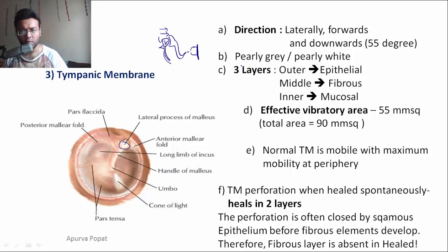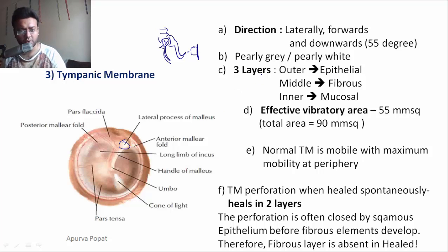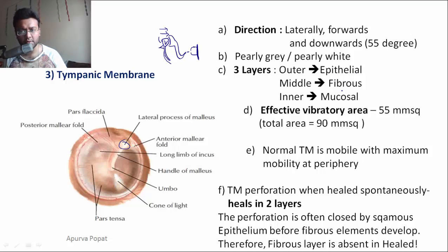The color of the tympanic membrane on examination is pearly gray or pearly white. Embryologically, it is composed of three layers: the outer epithelial layer derived from ectoderm, the middle fibrous layer derived from mesoderm, and the inner mucosal layer derived from endoderm.